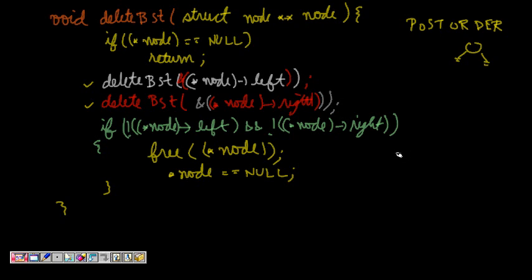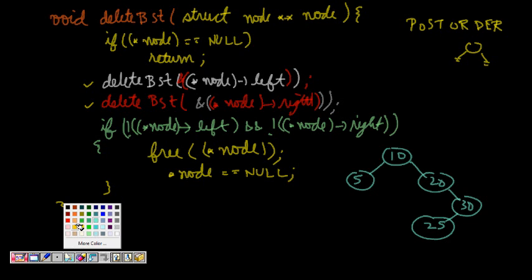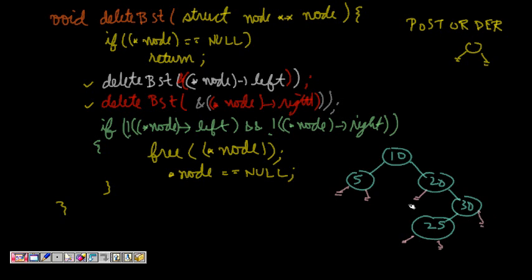I have a small example tree: 10, then 5, then 20, and 25. You can try it with a bigger one. I'll mark null pointers for the leaf nodes. This is the root of the tree.